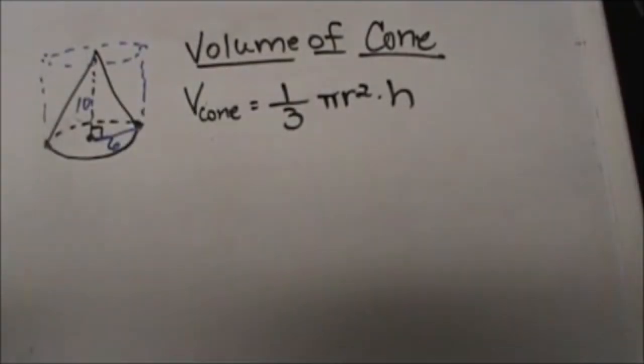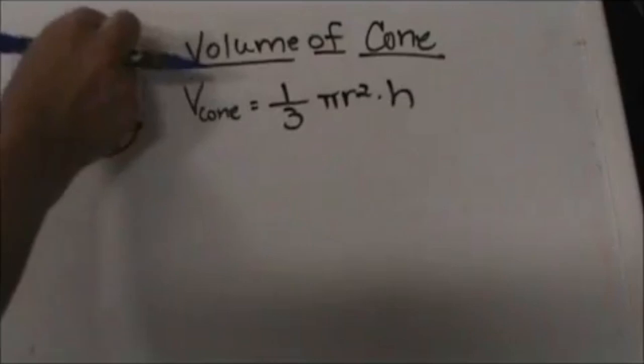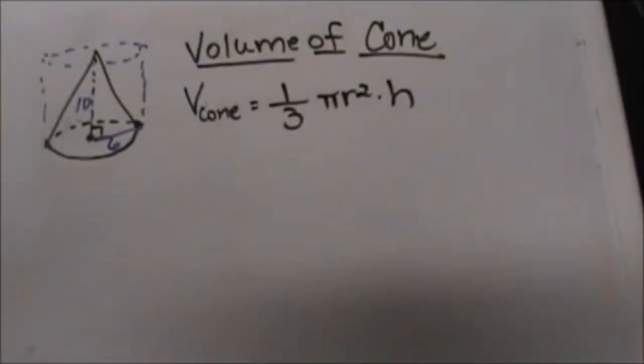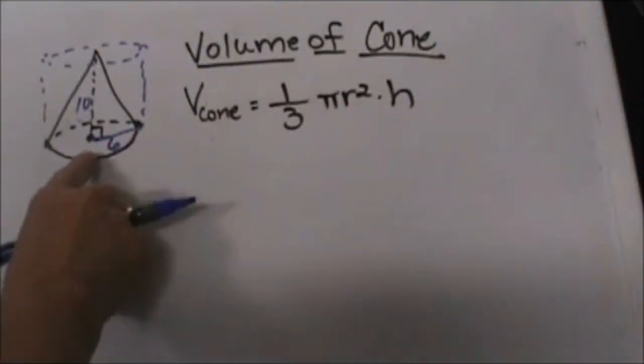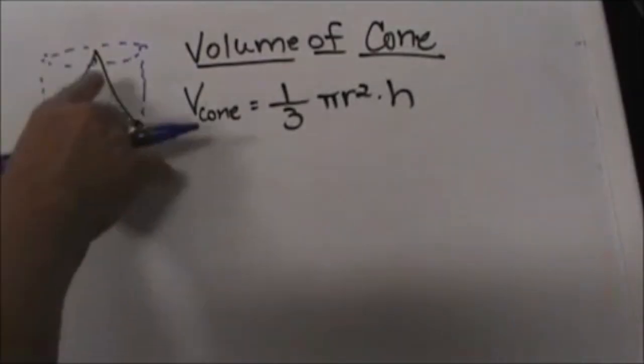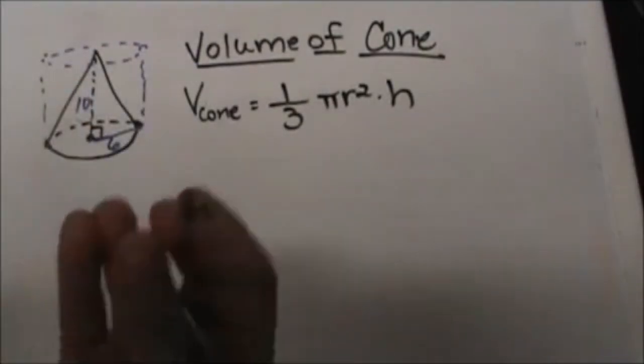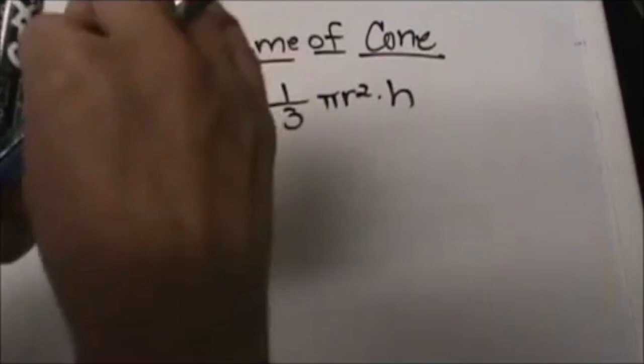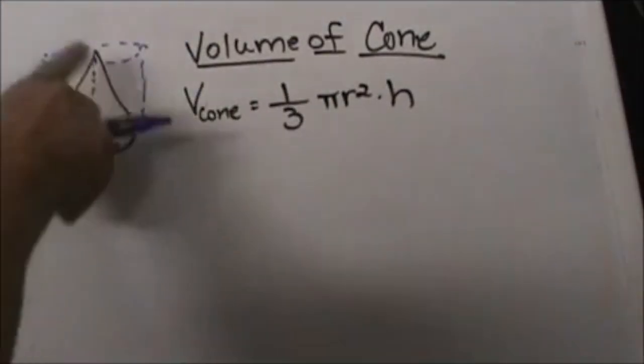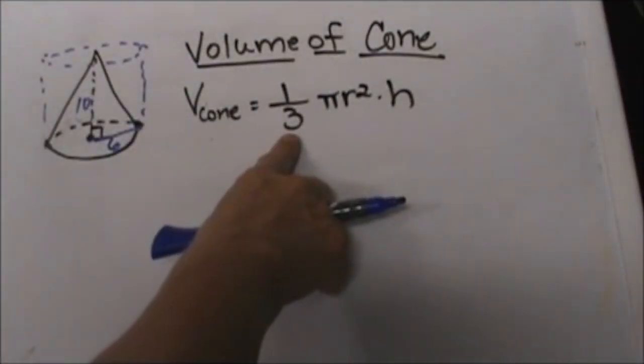So I have kind of sketched it there so you can see the cylinder that the cone would fit inside of. It takes three cones to fill up a cylinder, so think about taking a cone and just filling up a cylinder. It would take three cones to fill that cylinder up so the volume is one third of it.